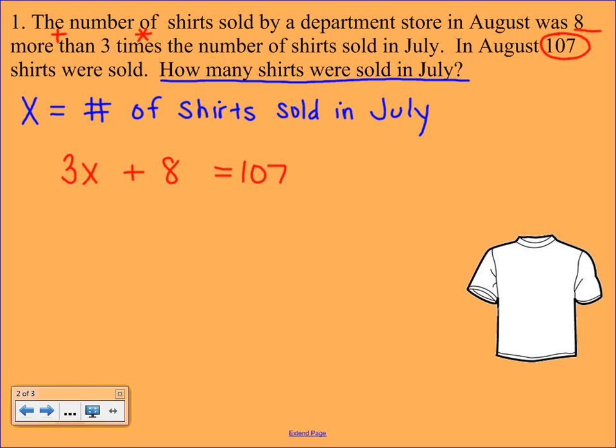From here we just solve. We undo addition first, which means we subtract 8 from both sides. We bring down the 3x, we bring down our equal sign, and that's 99. Now we divide both sides by 3. Make sure you are using the fraction bar for division as opposed to the division symbol. And then x would be 33.